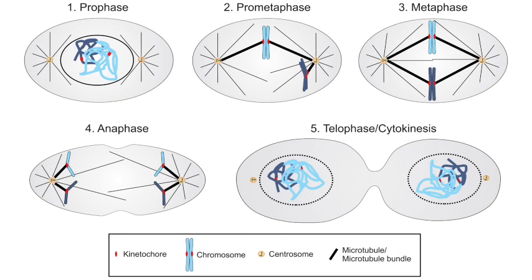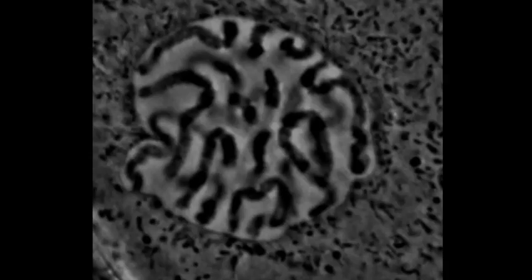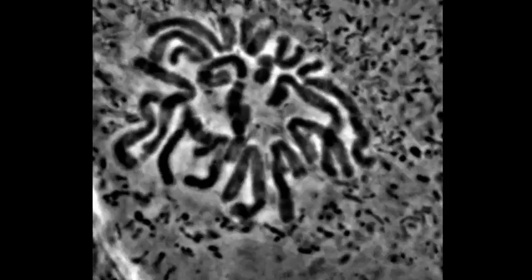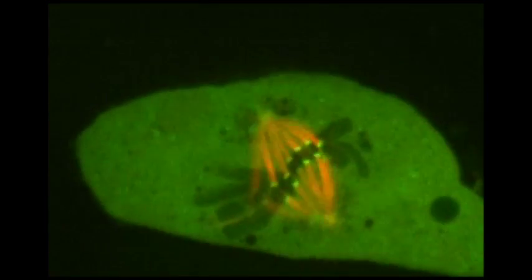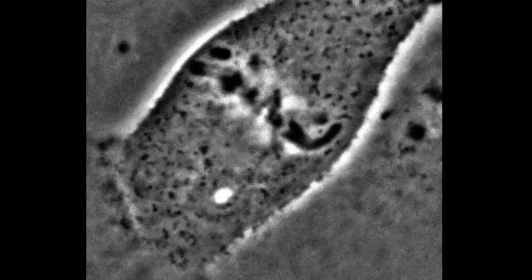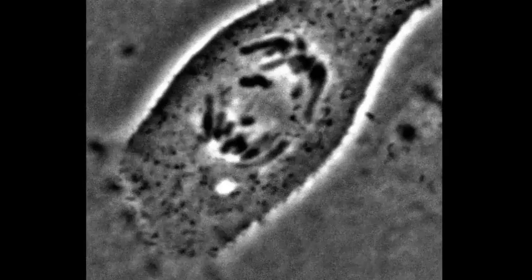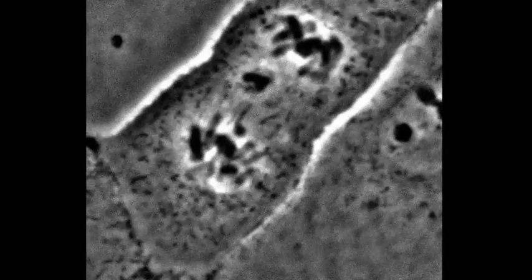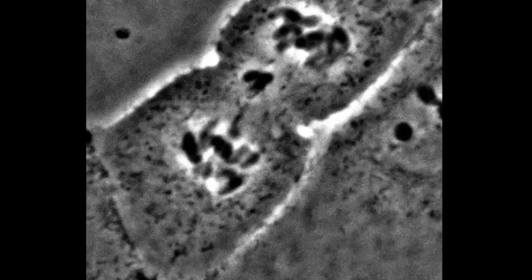To people flipping through their textbooks, cell division may seem just like business as usual. But now that we've looked closer, we can see that it's more like a bustling, action-packed choreography. And by peering deeper into the details of each dance step, we can better understand how life is sustained, and how perturbations of this beautiful chromosome dance can lead to disease. Try to picture your cells dividing. What do you see?